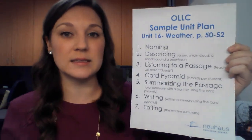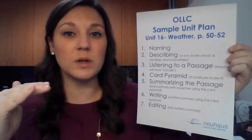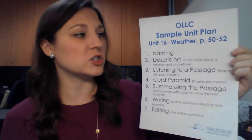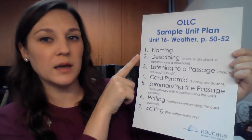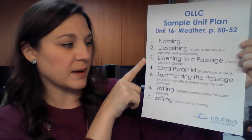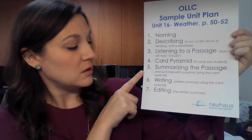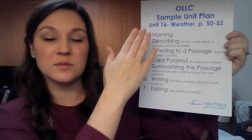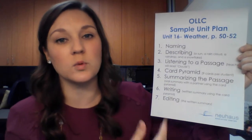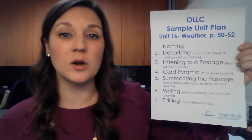The sample is posted with this video. I have an oral language sample unit plan for Unit 16. This is just kind of an outline of what's in the manual, and it will help you think through how many days of instruction you might need for each activity. I have Activity 1 is naming, then we have describing, and I write down what pictures I'll need. Listening to a passage — I wrote down the title of the passage. We're doing a card pyramid. How many cards will I need per student? We're doing summarizing the passage, and we're writing and editing. This will help you think about each activity, what you might need to prepare ahead of time, and roughly how many days of instruction each activity might take.